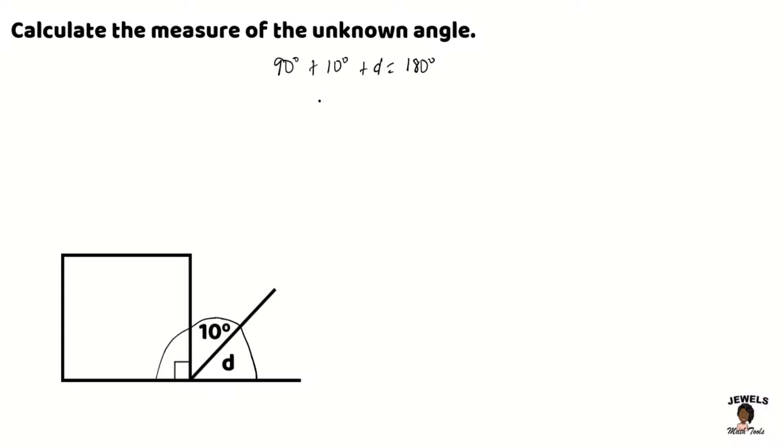So 90 plus 10 is 100 degrees plus D should equal 180 degrees. And now we're going to take the angle 100 degrees and subtract it from my 180 degrees. When 180 subtracts 100 degrees, we find that our angle D is 80 degrees.